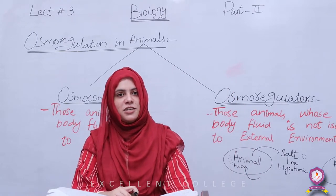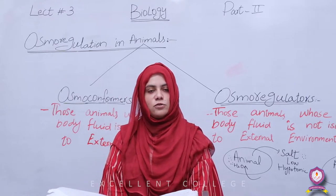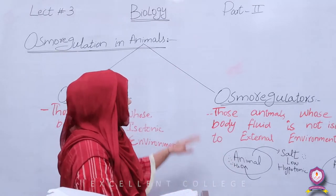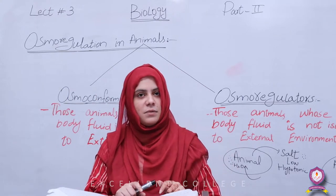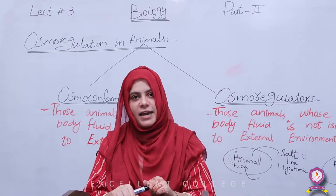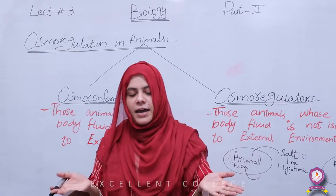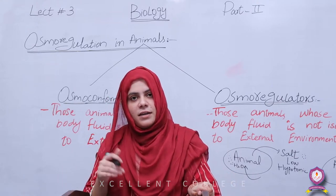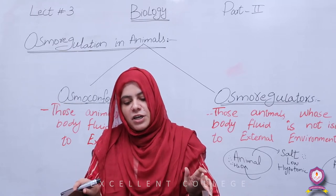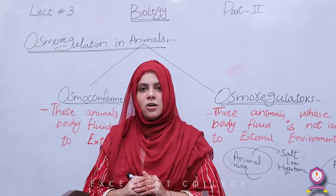पिछले lecture में हमने Osmo Regulation in Plants की बात की थी। अब Animals की बात करें तो जानवरों की body के अंदर भी न तो salts ज्यादा और water बर्दाश्त करने की capacity है, न ही बहुत कम बर्दाश्त करने की capacity है। बल्कि ये भी अपने आपको maintain करते हैं। Animals में अगर जरूरत से ज्यादा पानी आ जाए तो Animal Cell फट जाते हैं। जानवरों के अंदर भी water और salt का balance रखना बहुत important है, क्योंकि इनके जिंदा रहने के लिए water और salt को maintain करना है।